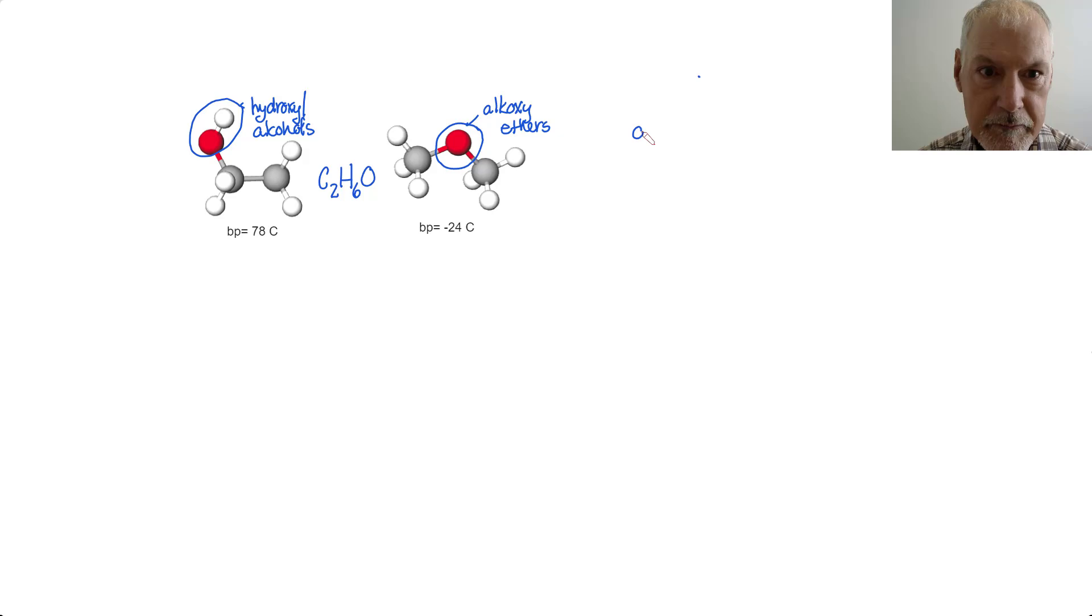So, if we have an alcohol, a two carbon alcohol, there would be a corresponding two carbon ether that would be its isomer. And this happens with a few other classes of chemicals as well.